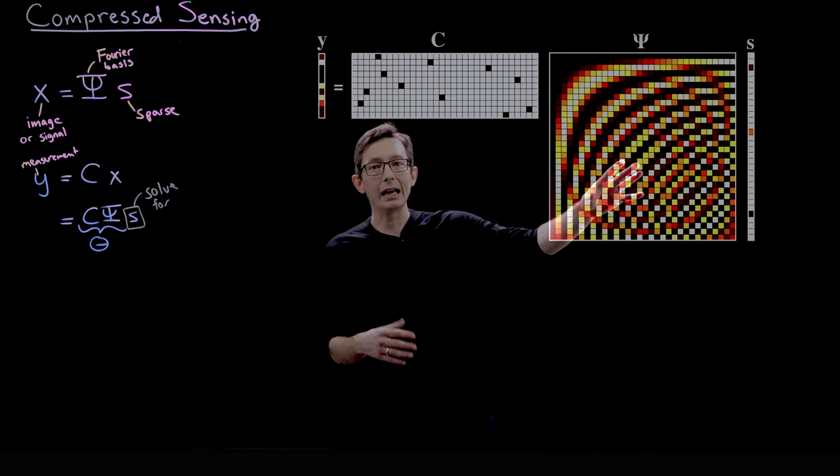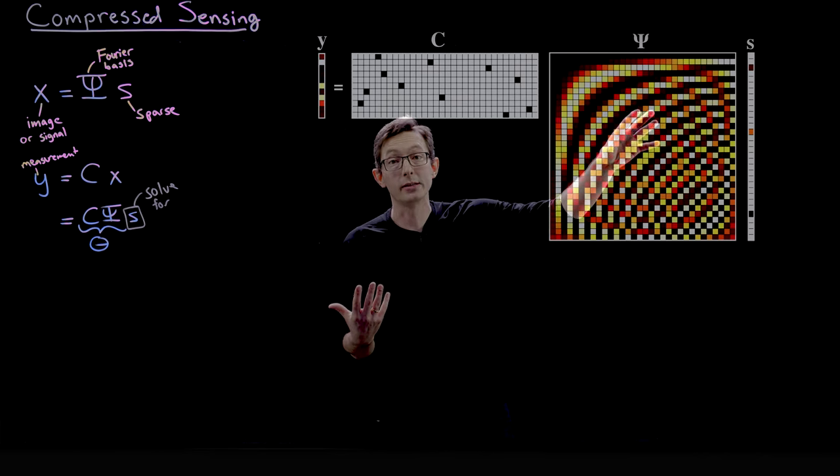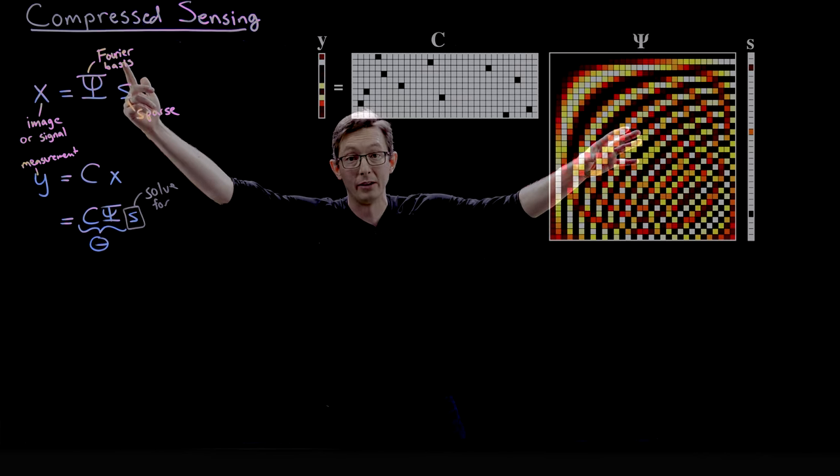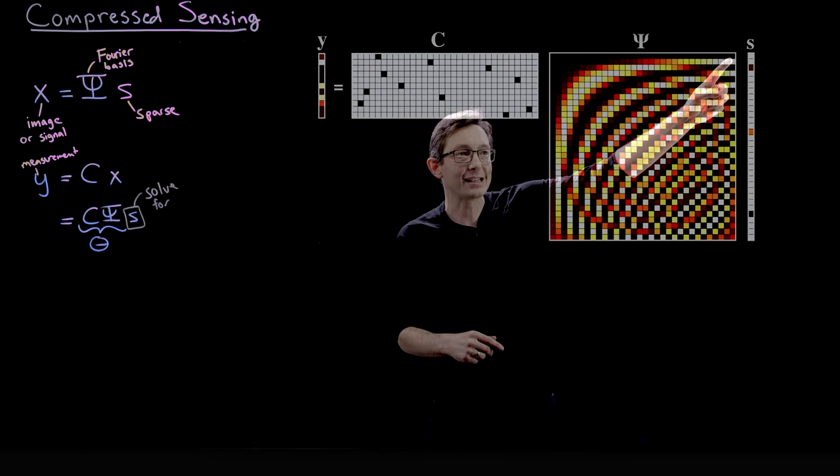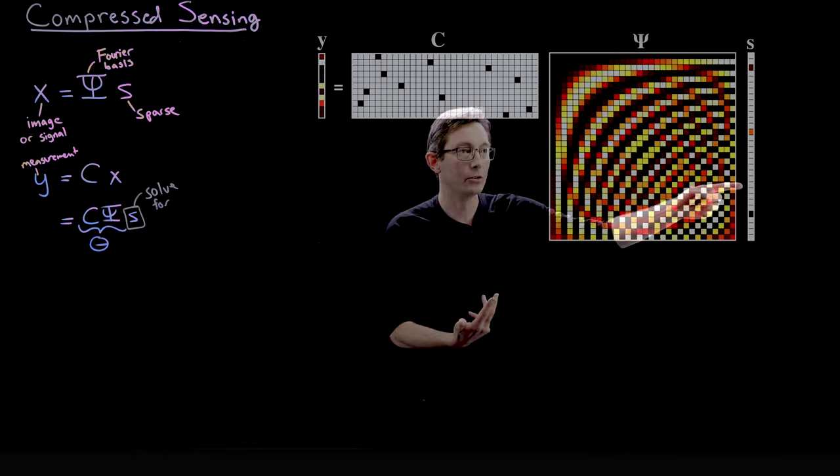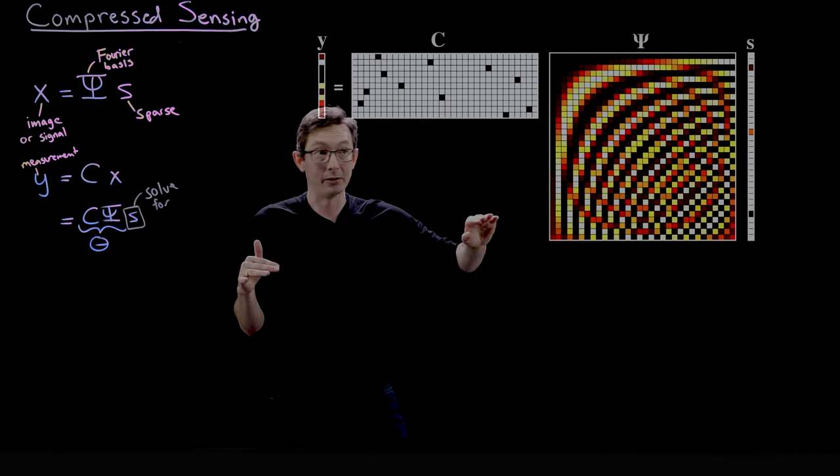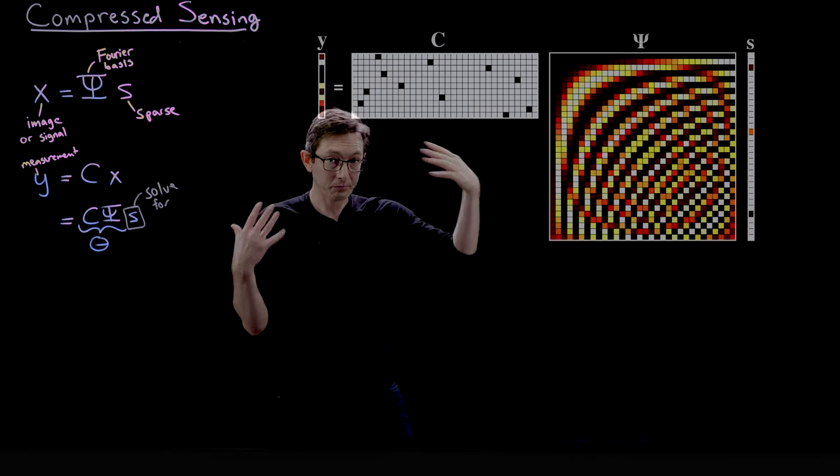So psi is our universal transform basis. In this case, I think this is a discrete cosine basis, but you can think of it as some Fourier basis or some wavelet basis. S is my sparse vector of coefficients. Here this is kind of a cartoon where there's only three non-zero coefficients. Everything else is zero. So here white is zero.